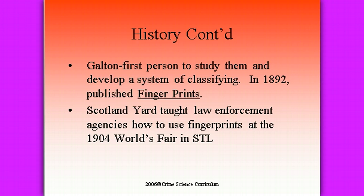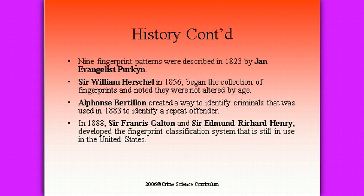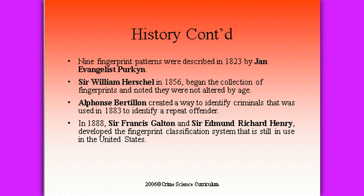There are nine different fingerprint patterns, and they were first described in 1823 by Jan Evangelist Perkin. Sir William Herschel, in 1856, began the collection of fingerprints and noted that they were not altered by age — the same from the time people were born all the way until they died. Alphonse Bertillon created a way to identify criminals used in 1883, developing a method to identify repeat offenders by collecting fingerprints, keeping them on file, and comparing them if someone was caught again.